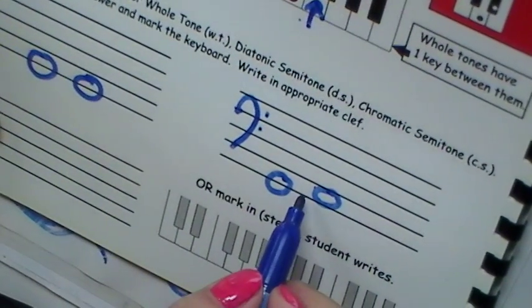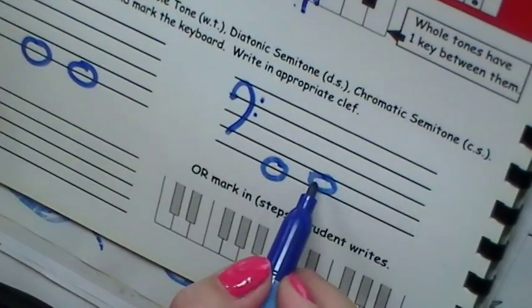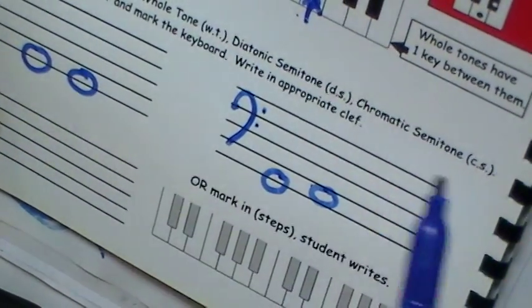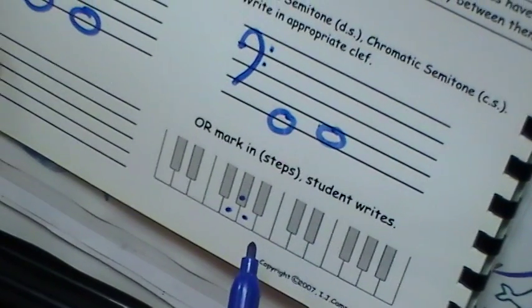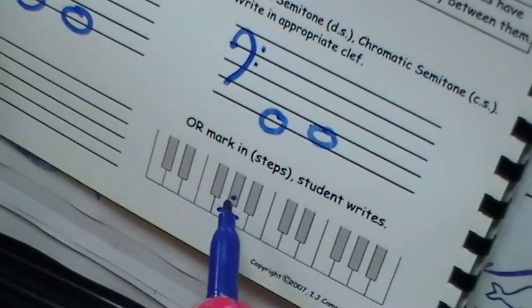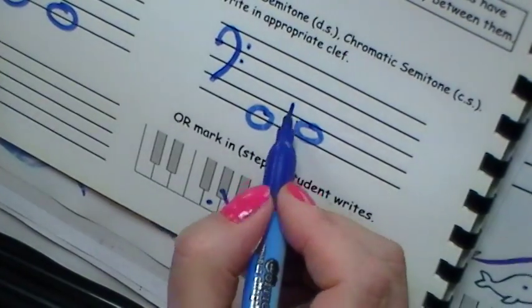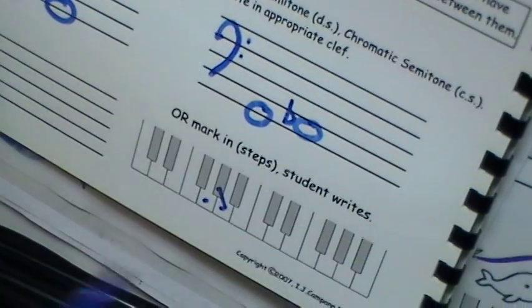So of course, this means nothing without a clef. So I made this a bass clef. That's a G to an A. So G to A is a whole tone. You see there's a note in between. That's a whole tone. If I wanted to make a diatonic semitone, I would make it an A flat.